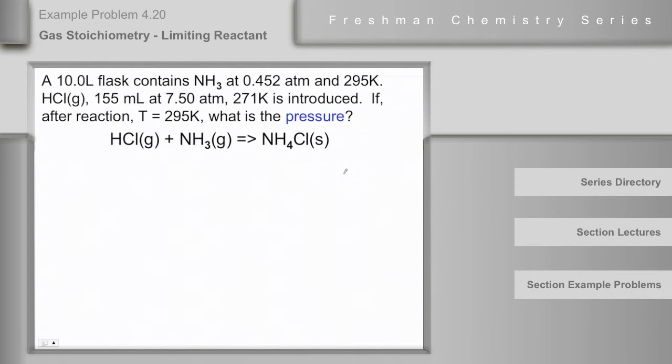A 10-liter flask contains ammonia at 0.452 atmospheres and 295 K. HCl, 155 milliliters at 7 atmospheres and 271 K is introduced. If, after the reaction, the temperature is 295 K, what's the pressure?